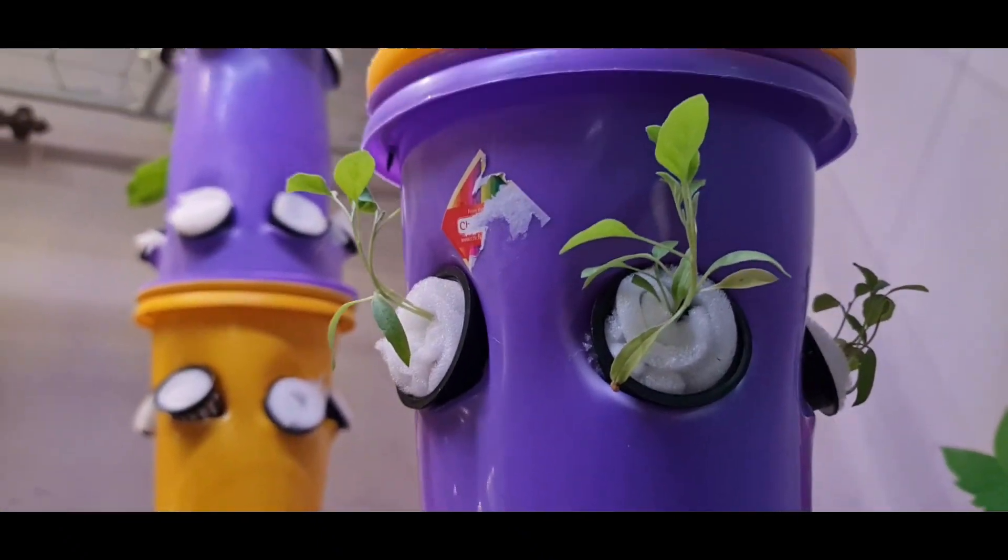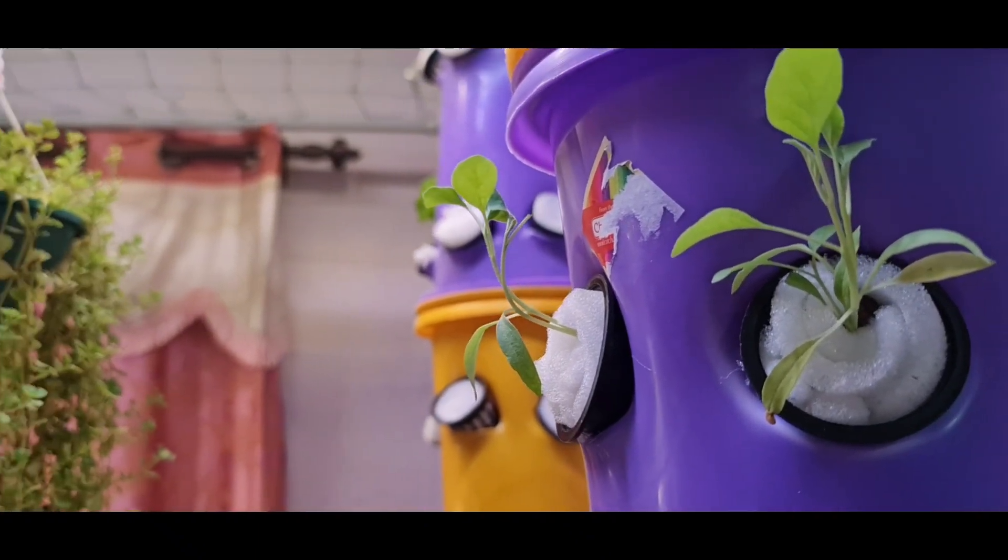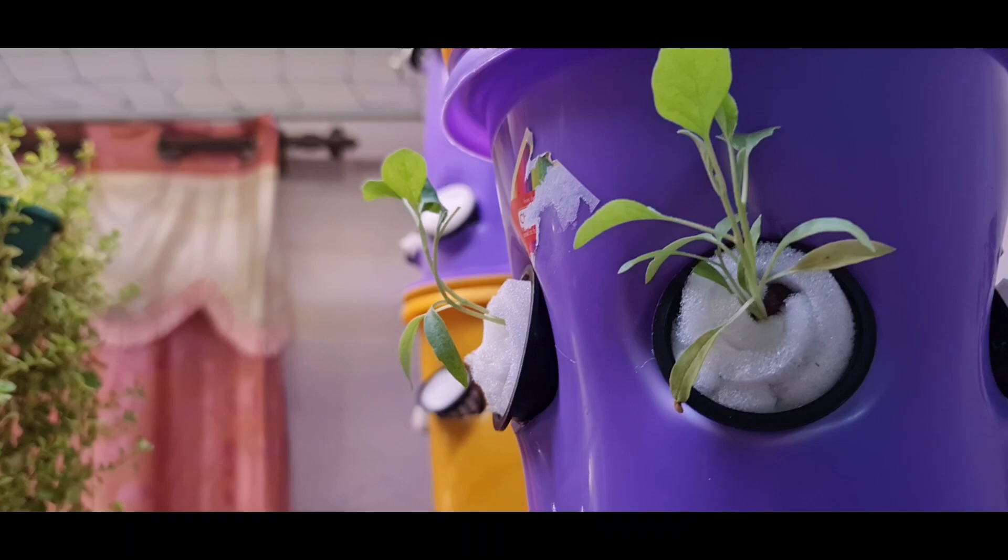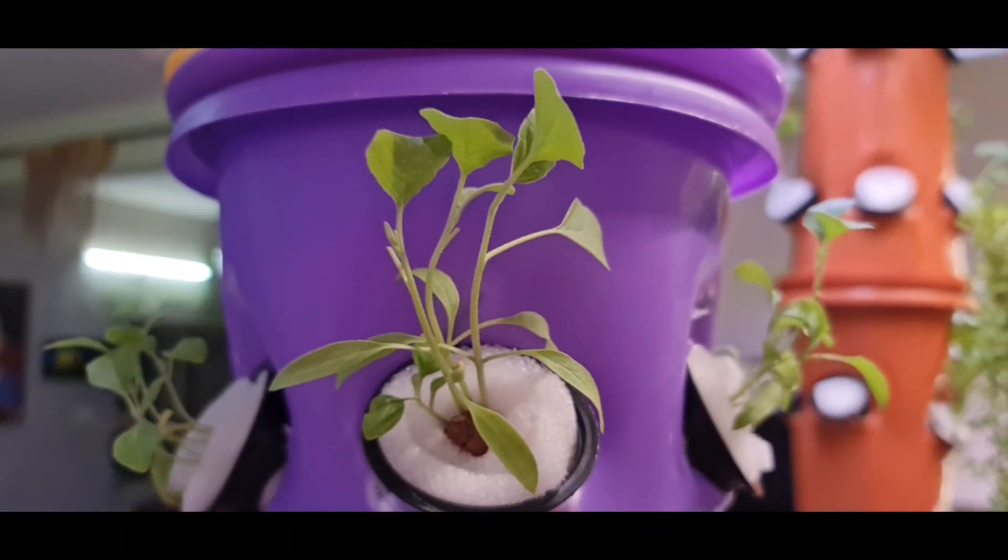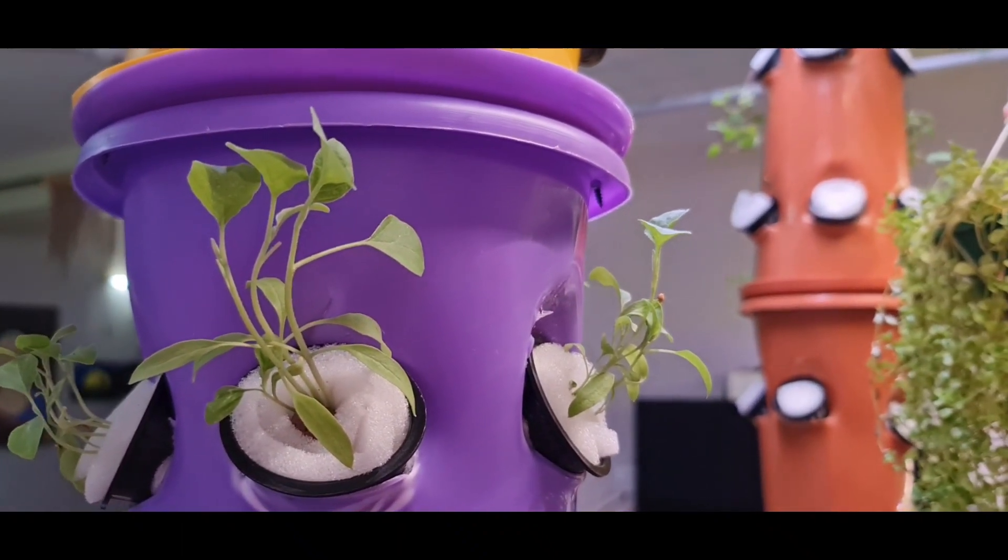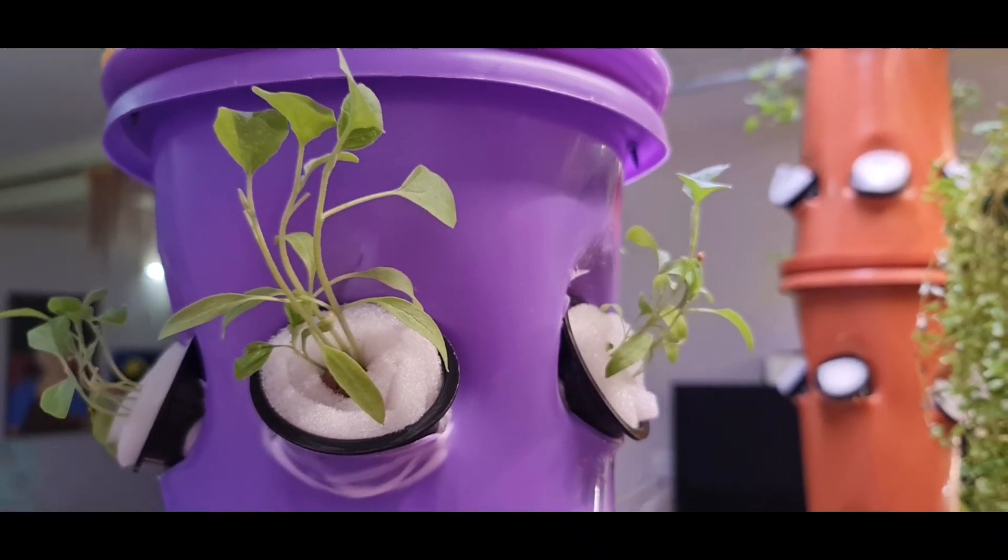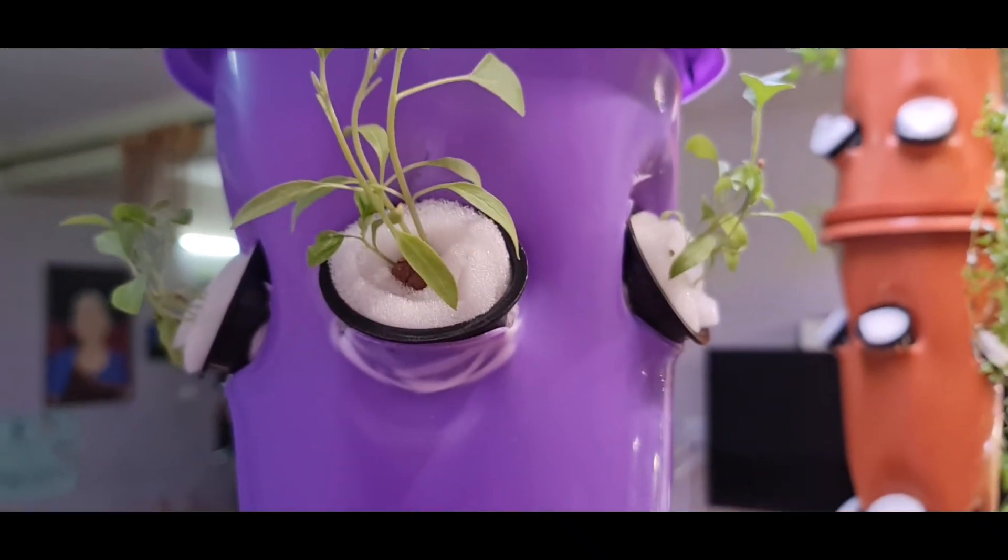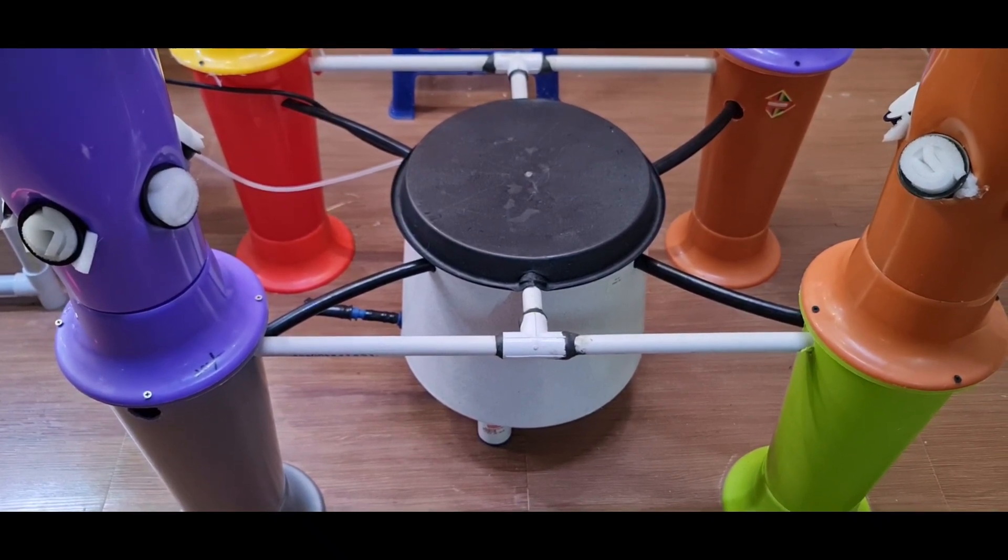As you can see, this brinjal plant also I have planted here. This was straight poking out and now it has started bending upwards. I think this upward movement towards the source of light is a good sign that they have taken up in this system and they have got adjusted to this particular system.